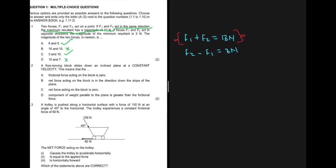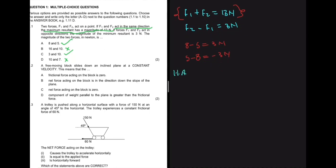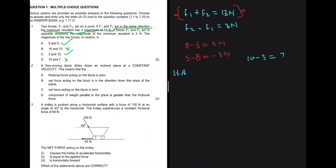Now we look at A and C for our second criteria: F2 minus F1 equals 3 newtons. For option A, 8 minus 5 gives 3 newtons, and 5 minus 8 gives minus 3 newtons. We're only interested in the magnitude, so 8 and 5 clearly works. For option C, 10 minus 3 equals 7 newtons, not 3. So only A satisfies our conditions, and our answer for 1.1 is A.